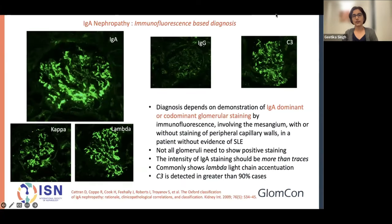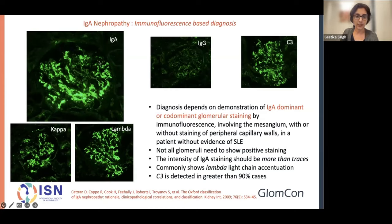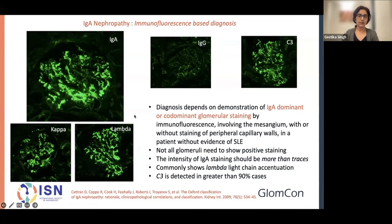For the pathologist, IgA nephropathy is an immunofluorescence diagnosis. What we look for in our tissues is the presence of dominant or co-dominant IgA. It most commonly comes with C3 — in 90% of patients we see lambda accentuation — and it's very important to note that there is glomerulus-to-glomerulus variability in the intensity of staining.